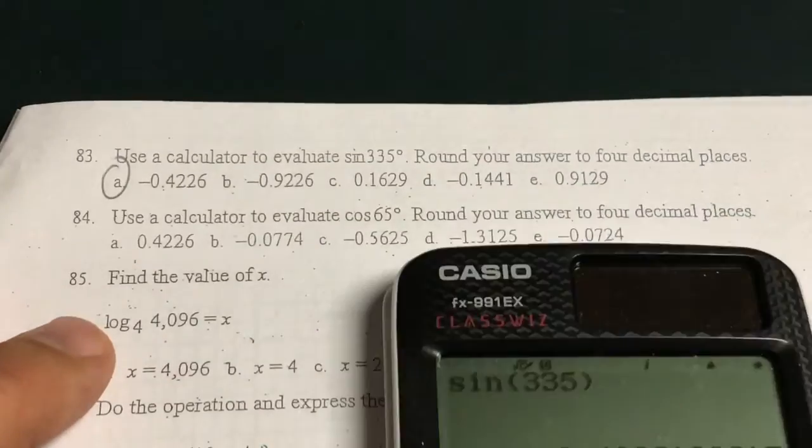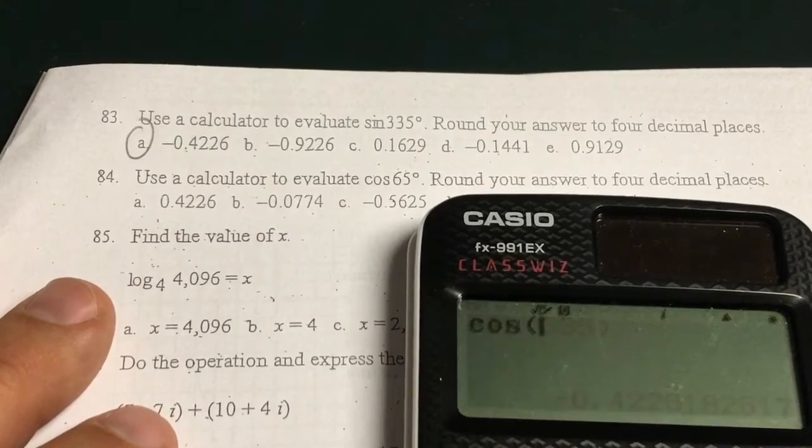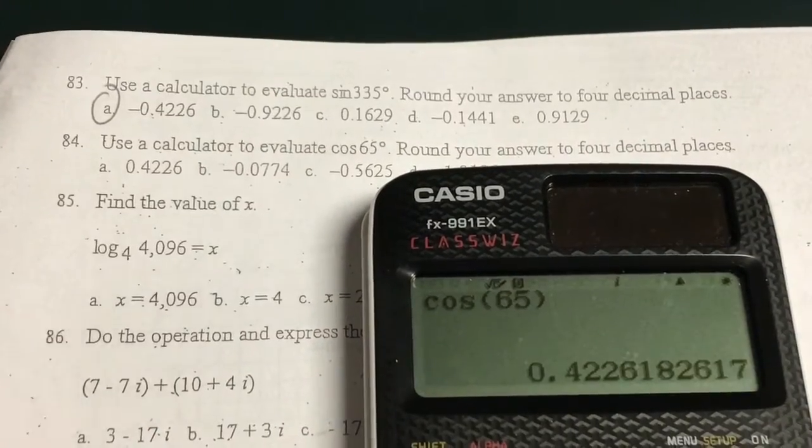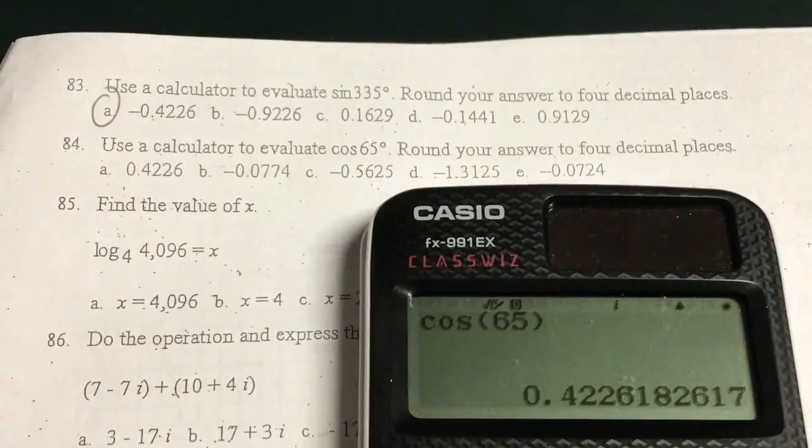Cosine 65. It's still in degree mode so I can just leave it. Cosine 65. I hope you know where these buttons are. You should. Cosine 65. That would be choice A also.